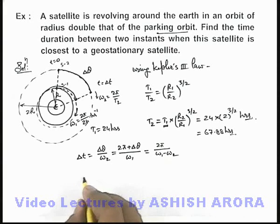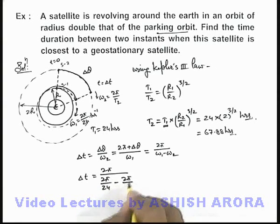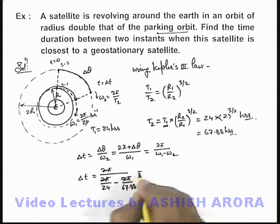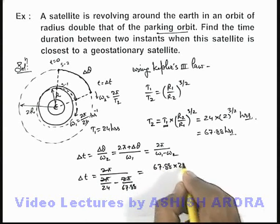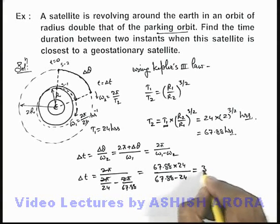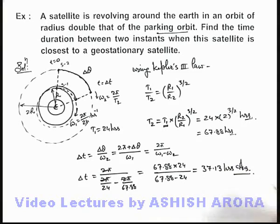Substituting the values of ω1 and ω2: delta t = 2π / (2π/24 − 2π/67.88). The 2π cancels, giving delta t = (67.88 × 24) / (67.88 − 24), which simplifies to approximately 37.13 hours. That is the answer to this problem.